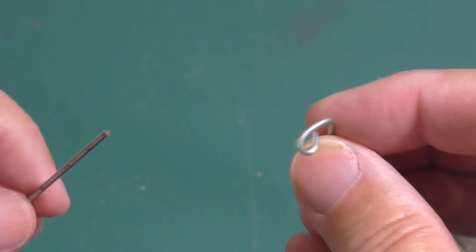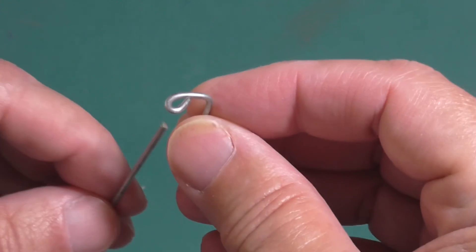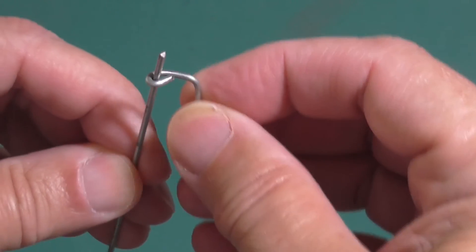Your loop should be just big enough to allow the wire it's made from to slide freely through the loop without much play.